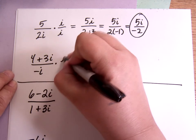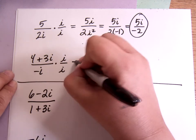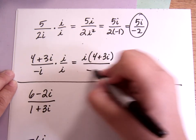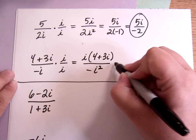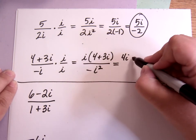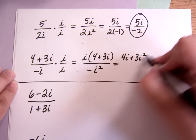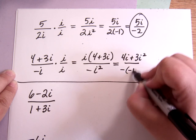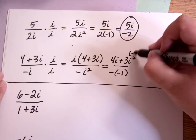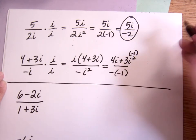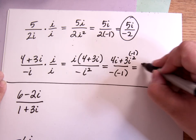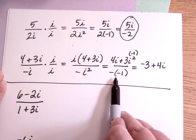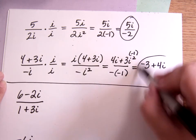This one, we distribute the top, because it's something with two terms times something with one term. So this is 4i plus 3i squared over negative i squared is negative 1, so that's minus negative 1, basically. This becomes a negative 1 also. 3 times negative 1 is negative 3. So you have negative 3 plus 4i over, this is going to be 1, so that's just negative 3 plus 4i.